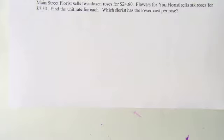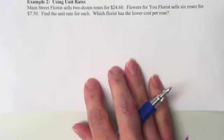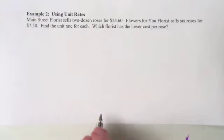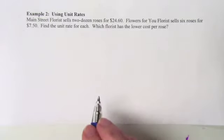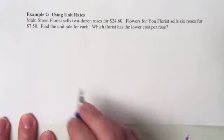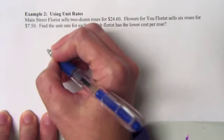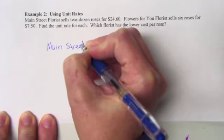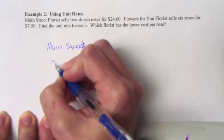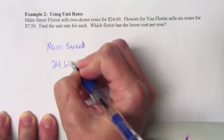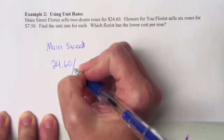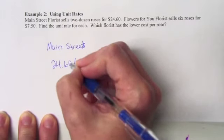The next thing we're going to look at is comparing two unit rates. Right here on this problem, we have two florists. We have Main Street florists and we have Flowers for You florists. Main Street florist sells two dozen roses for $24.60. So for $24.60, you get two dozen roses, which is 24 roses. So it's $24.60 for every 24 roses.